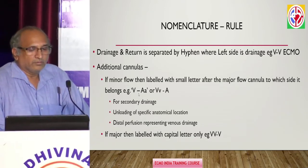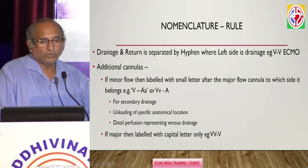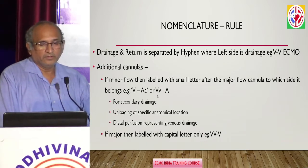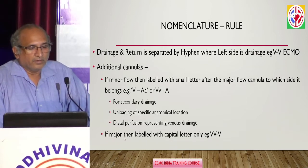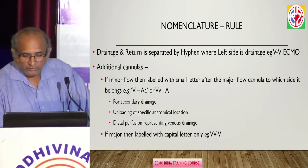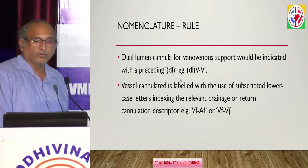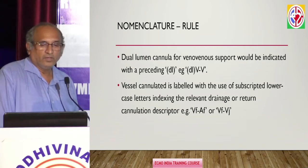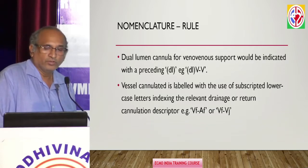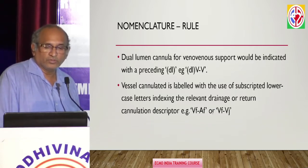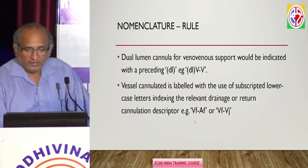If you require a second drainage or second return, you can put both — for example, AA or VV. A subscript represents venous drainage: if a major vessel, label with capital; if a smaller vessel, use lowercase. When you use a double domain, put DL in front. You can put a suffix to label which vessel has been used — VF means femoral vessel, VJ means jugular vessel; V stands for vein and A stands for artery.